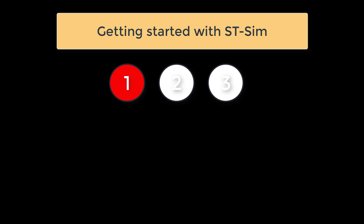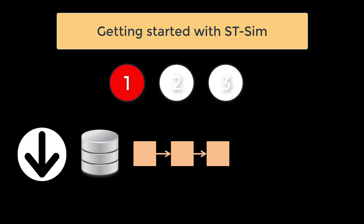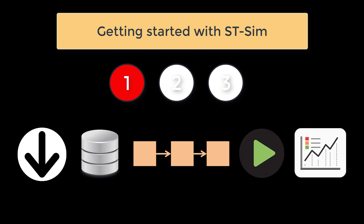Welcome to the Getting Started series for STSim. STSim is a software framework for developing and running state and transition simulation models. In this video you will download and install the software, create a new model library, build and run a simple state and transition simulation model, and learn how to view graphs of your results.